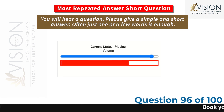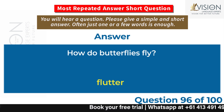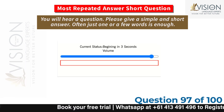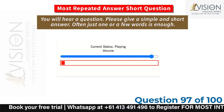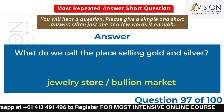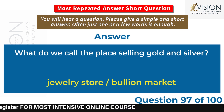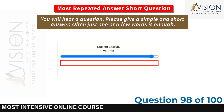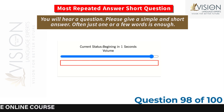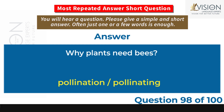How do butterflies fly? Flutter. What do we call the place selling gold and silver? Jewelry store. Why do plants need bees? Pollination.